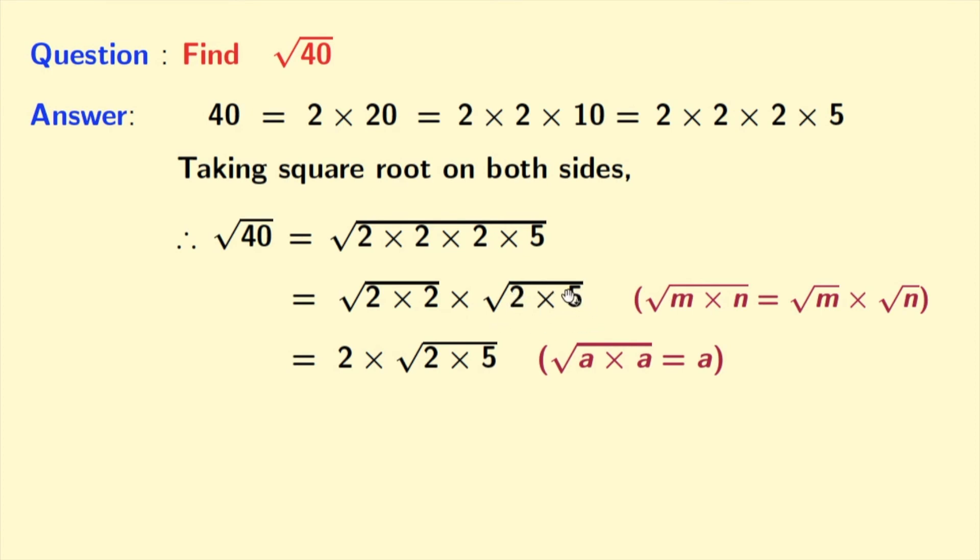perfect square, so we will keep it the same. Now we will multiply the second square root, and doing that we have root 10, and the final answer is 2 root 10.